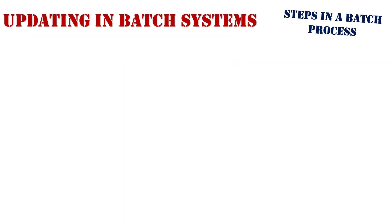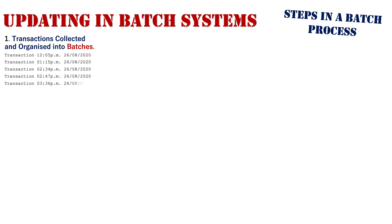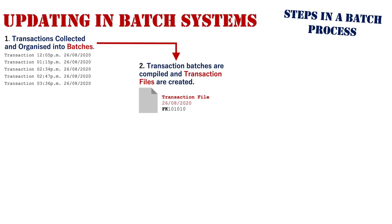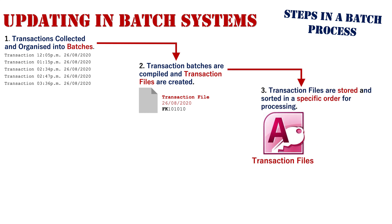Here are the steps in the actual batch process. Firstly, the transactions are collected and organized into batches — for example, a transaction list of all transactions occurring throughout the day. These transactions are then compiled into a transaction file, so all the batches are organized and compiled together.